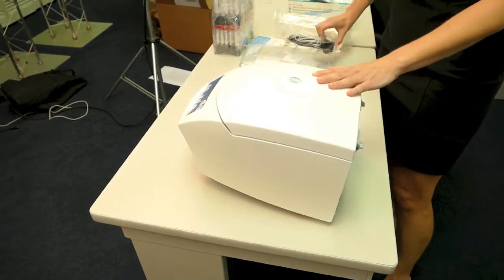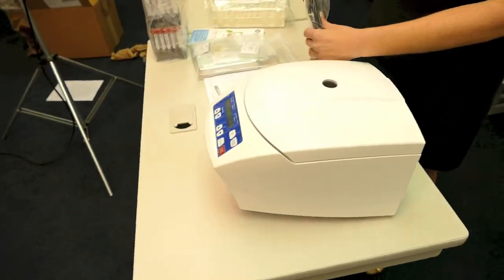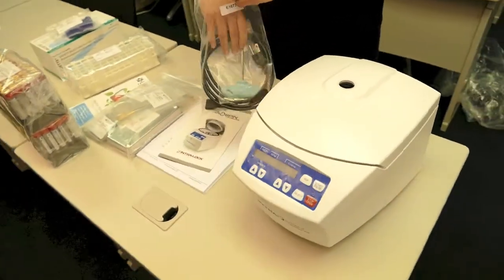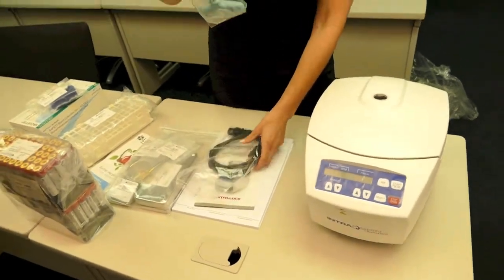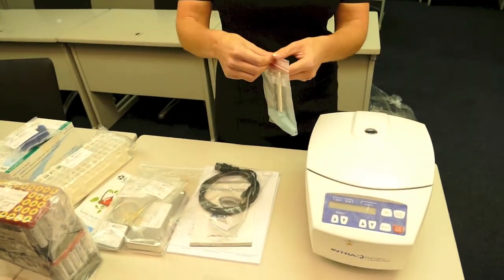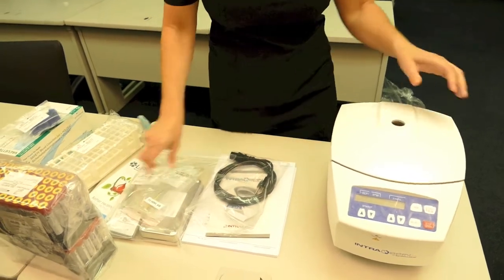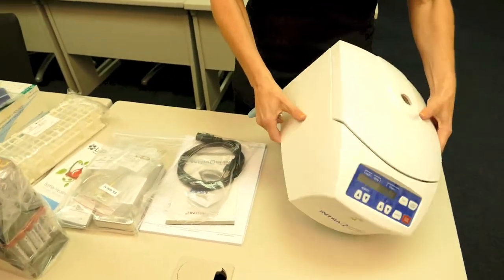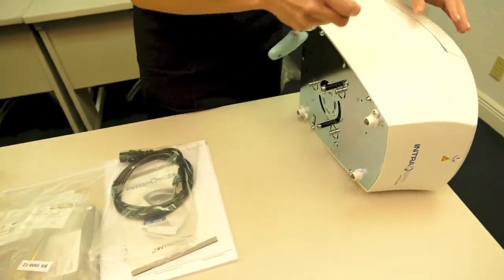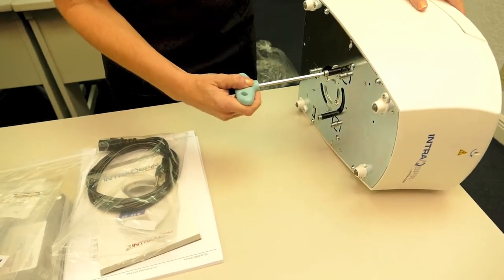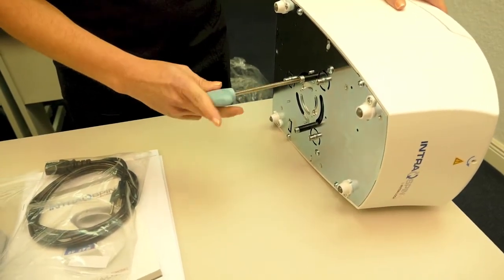What we want to remember is to have it on a flat surface. You're going to notice the hand driver. What this is for is to remove the bolts underneath the centrifuge. These are for travel. If you're ever going to be taking the machine to another office, carrying it with you, you'll want to put these back in place.